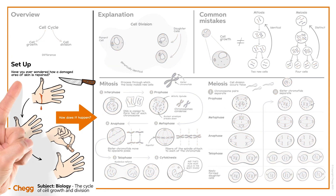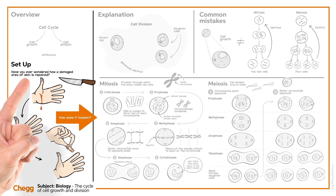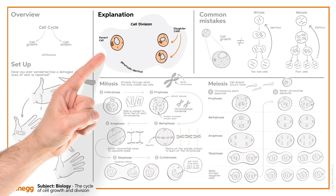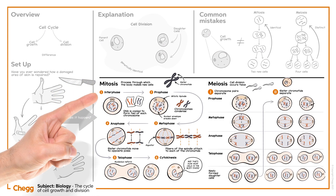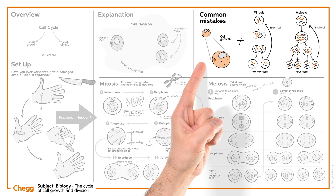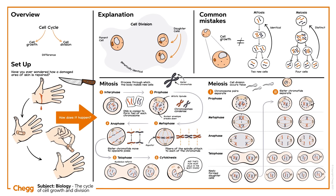Thanks to mitosis, damaged skin can be healed as new cells are created to replace old ones. In fact, we're constantly generating new cells, especially in skin and muscle tissues. Billions of cells are replaced in your body each day. Today we've covered the steps of mitosis and meiosis, and how cell division is distinct from cell growth.